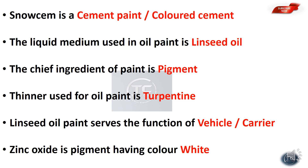Thinners used in paint include: turpentine, petroleum spirit, and similar solvents. These help adjust the properties and consistency of linseed oil-based paints.